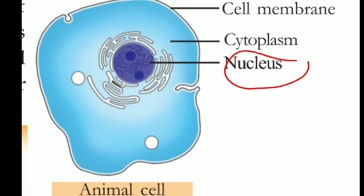Now, the nucleus — what I mean by nucleus — the center of the cell is known as nucleus. The main parts of an animal cell are cell membrane, cytoplasm, and the center of the cell is nucleus.